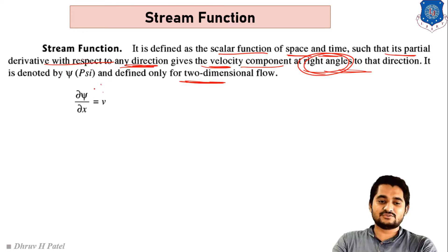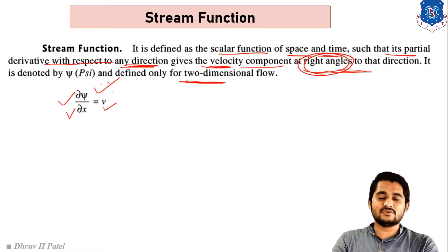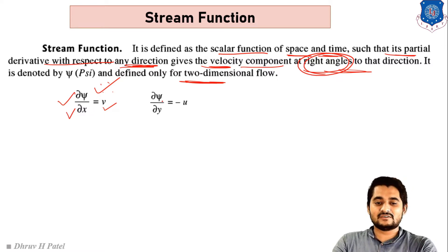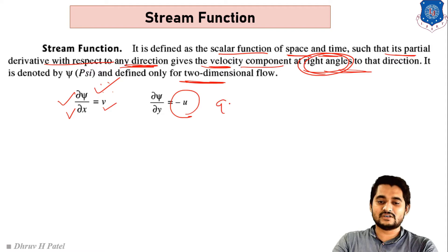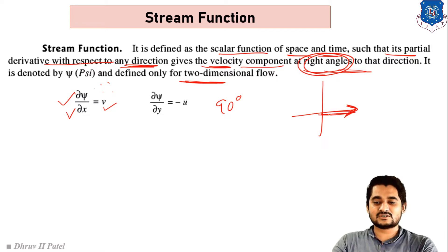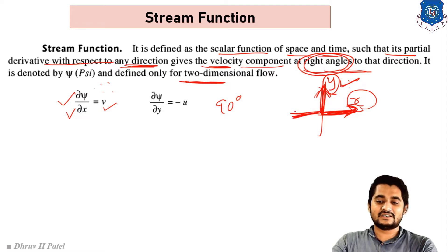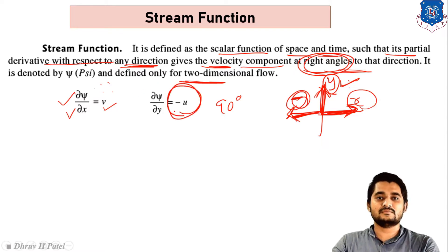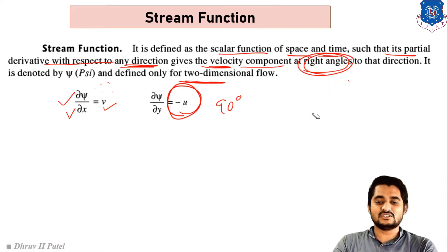For stream function psi: del psi / del x = v (velocity in y direction), and del psi / del y = -u (velocity in x direction). For the stream function, one of the components will be minus. If we derive with respect to y we get velocity in the x direction, but in the negative direction, so u is minus here. You have to remember that u is minus.